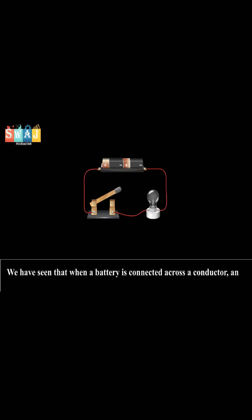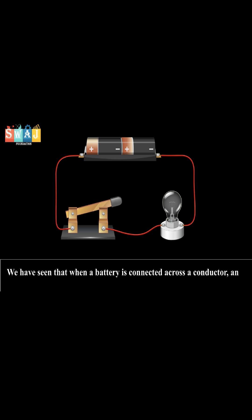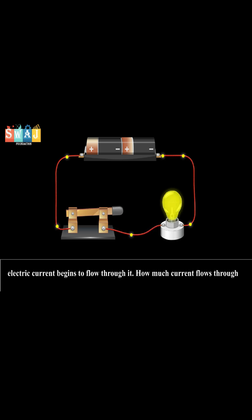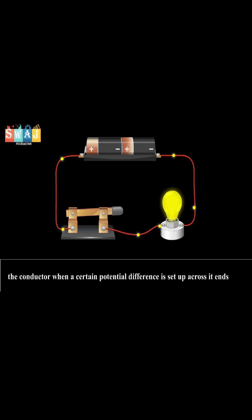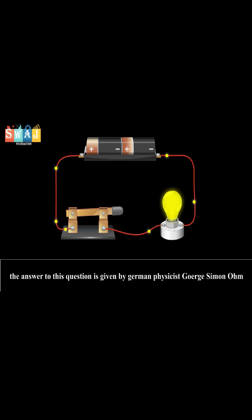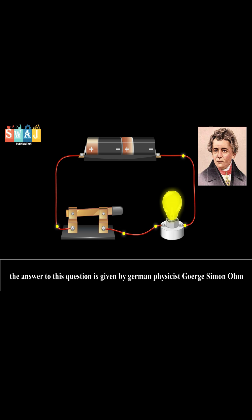Ohm's Law. We have seen that when a battery is connected across a conductor, an electric current begins to flow through it. How much current flows through the conductor when a certain potential difference is set up across its ends? The answer to this question was given by a German physicist George Simon Ohm.